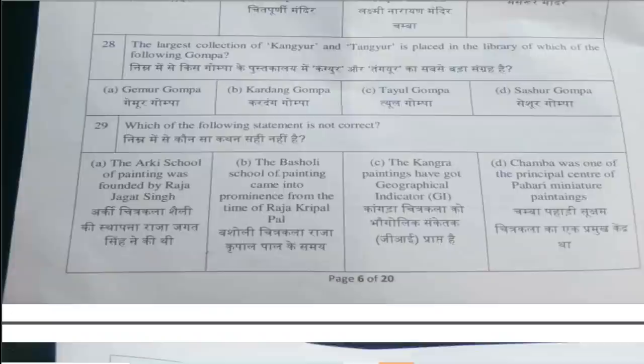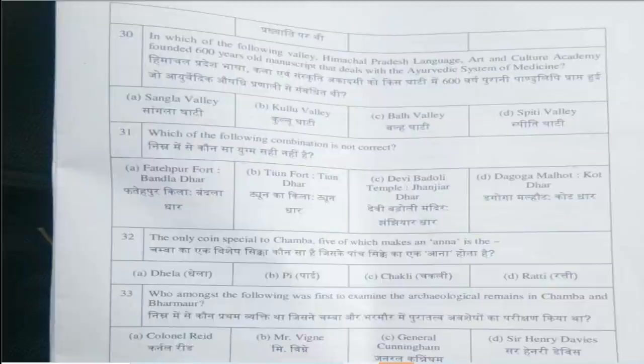Twenty-eighth question is: The largest collection of Kangyur and Tangyur is placed in the library of which gompa? The answer is option B, Kardang Gompa. Next question: Which of the following statements is not correct? The answer is option A — The Arki School of Painting was founded by Raja Jagalsingh. Next question: In which valley did the Himachal Pradesh Language Art and Culture Academy found a 600-year-old manuscript on Ayurvedic medicine? Answer is option B, Spiti Valley.